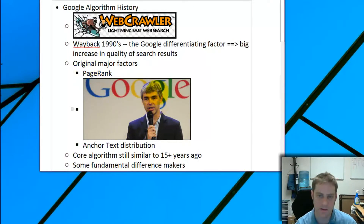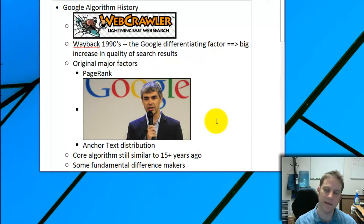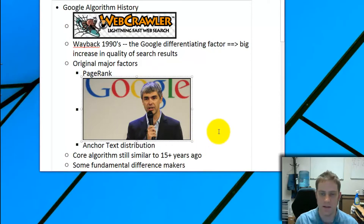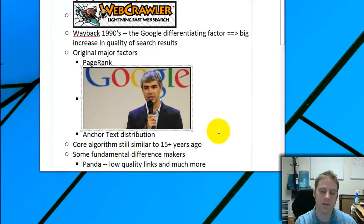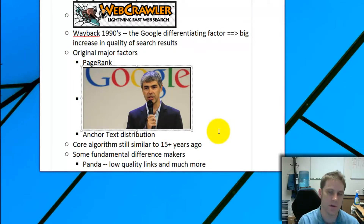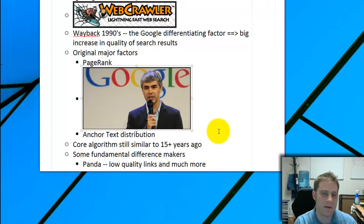One of the original major factors was something called PageRank, named after Larry Page, one of Google's founders. This metric isn't really valid today — it's too easy to game, people figured it out over the years. Google doesn't even update it very often, and the best people don't use it as part of their analysis anymore. There are better metrics out there.